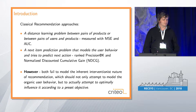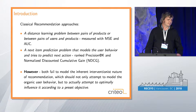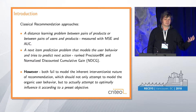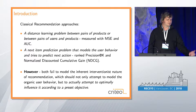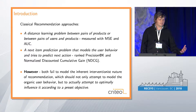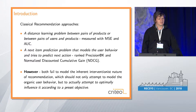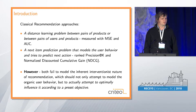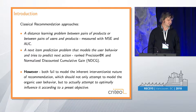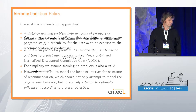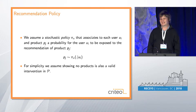We use metrics like MSE and normalised discounted cumulative gain. We can use things like word2vec or matrix factorisation, and sometimes RNNs. But really what we're interested in is: if we're going to intervene, how does it work? And this comes from logging from the recommender system itself.